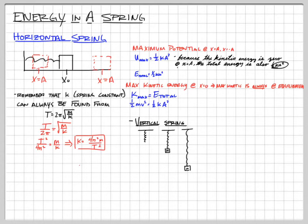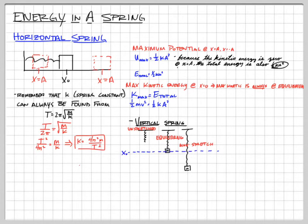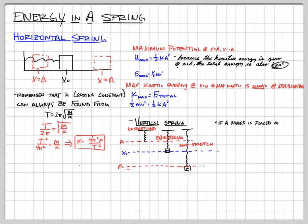That bottom position is kind of the bottom of our motion. Let's label these: the first is unstretched, the second is equilibrium, and the third is the maximum stretch of our spring. We'll draw that blue equilibrium line and call it x₀. That top position is one of our amplitudes and the bottom is our other amplitude, so we're looking at a mass dropped from the unstretched spring and pulled through equilibrium down to the bottom amplitude.